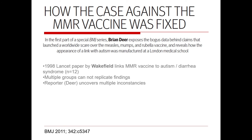Next, let's look at another story of scientific misconduct highlighted in the late 1990s. A paper was published in the journal Lancet by Dr. Wakefield that linked the mumps, measles, and rubella vaccine to a syndrome of autism and diarrhea. It was based on 12 patients, but multiple groups could not replicate Dr. Wakefield's findings.